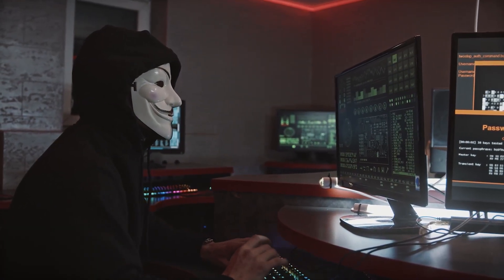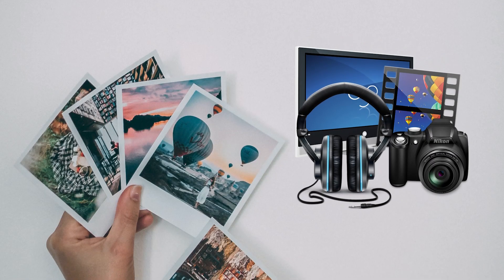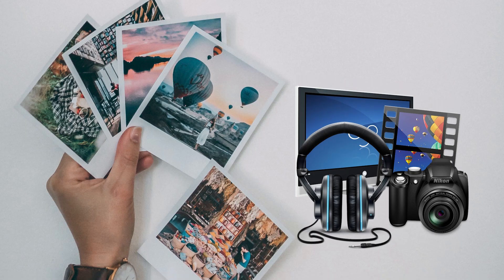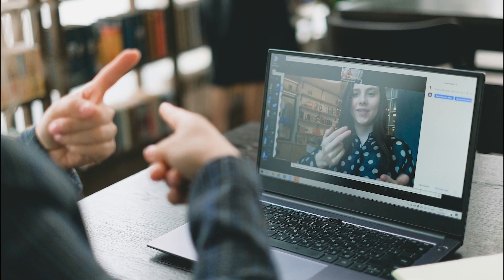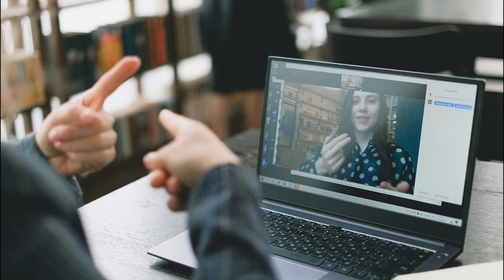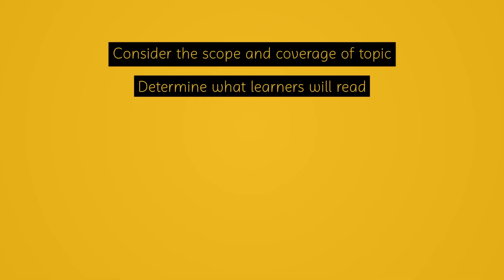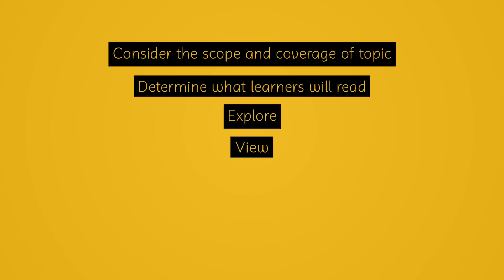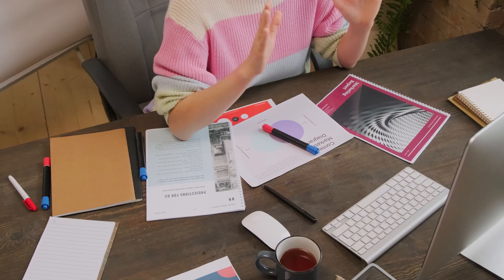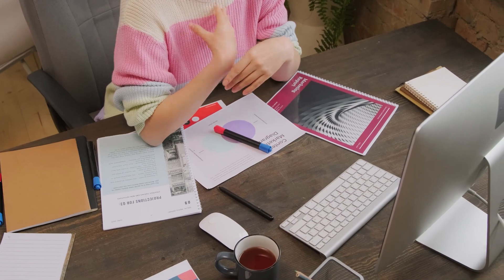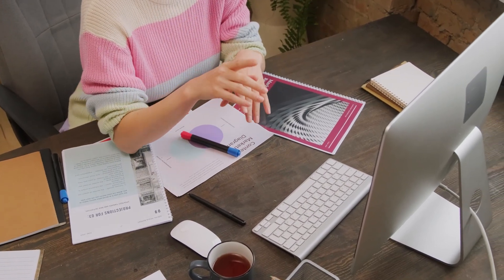Furthermore, you can consider the following when selecting appropriate multimedia elements for specific learning objectives in teaching English and social studies. Consider the scope and coverage of the topic. Determine what learners will read, explore, view, hear, experience, or create. Ensure that materials and media support and align with the stated learning objectives.